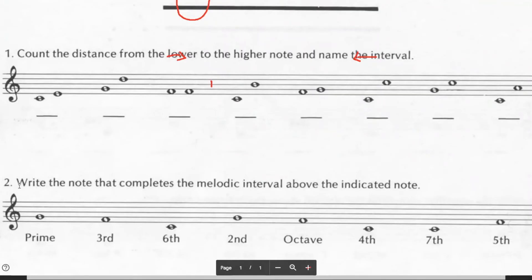Okay. Question number two, write the note that completes the melodic interval above the indicated note. So the first one is a prime note. Remember, melodic is, I'm going to call them isolated notes, do to re. They're not simultaneously played together. They're, think of a melody. Okay. So now write the note that completes the melodic interval above the indicated note. So the first one is a prime note. Remember, prime notes, first, unison,